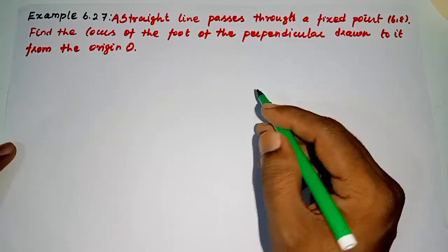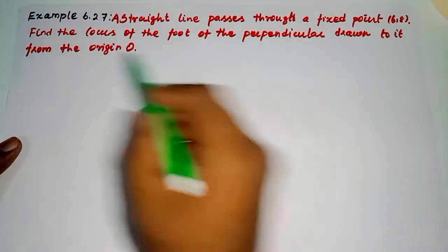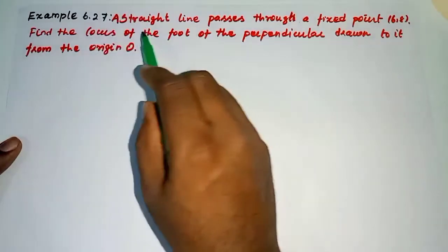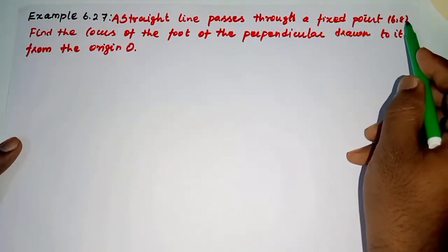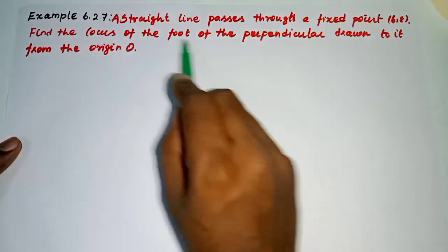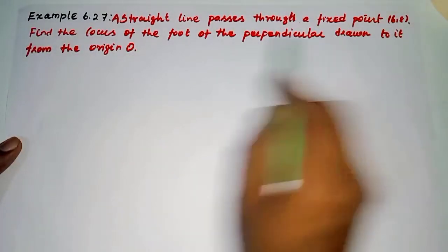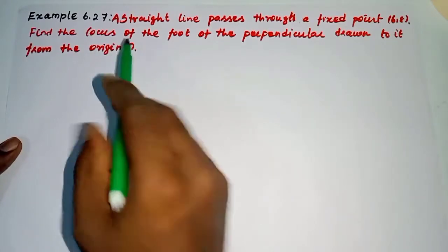Hi student, this is Silambu MCS Institution, 11th standard, Example 6.27. A straight line passes through a fixed point (6,8). Find the locus of the foot of the perpendicular drawn to it from the origin.